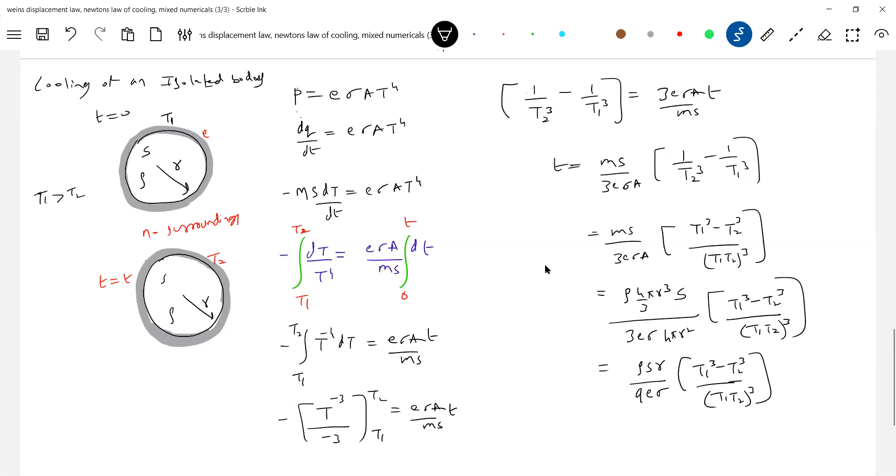A very important conclusion is what we are going to have. The time taken for it to cool down - cooling of an isolated body - the temperature decreases. Time taken depends on what? Depends upon the density, depends upon the radius, depends upon the emissivity. If emissivity is more, then it will give out more energy, more thermal radiation will be there, then it takes less time.